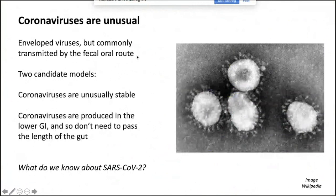We considered two models, though this isn't fully resolved. It could be that coronaviruses are unusually stable, or it could be that coronaviruses are produced in the lower GI tract and so don't need to pass through the full length of the gut. Maybe it's not strictly fecal-oral: virus may come out in fecal material and then contact or fomites could initiate the next round of infection.